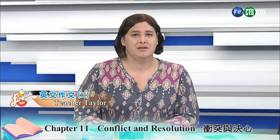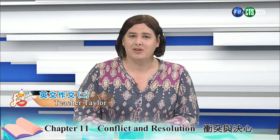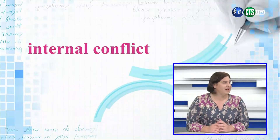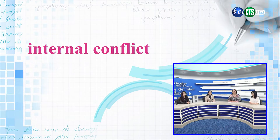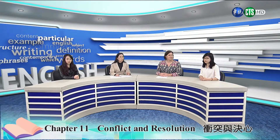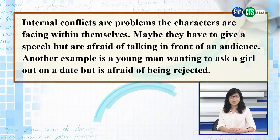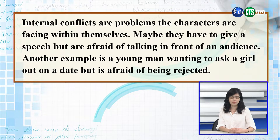There are two types of conflicts: internal and external. 冲突有两种形式，就是内部冲突和外部冲突。Laura, would you tell us what the internal conflict is? Internal conflicts are problems that the characters are facing with themselves. Maybe they have to give a speech but are afraid of talking in front of an audience. Another example is a young man wanting to ask a girl out on a date but is afraid of being rejected.